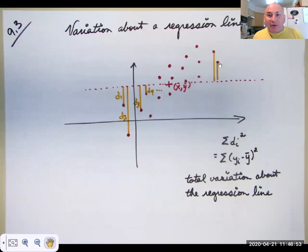So variation about a regression line. We're going to start with all of our data points, and here's the point x bar, y bar. Now we're going to measure everything from y bar. So we're going to take each of these deviations from each of our data points to y bar.